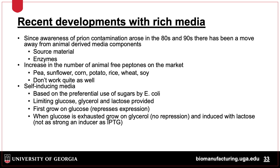Originally derived from animal sources, most rich media products are now plant-based in order to meet regulatory requirements that disallow animal components because of risk of viral or other contaminants such as prions. The source material and any enzymes used in the manufacturing of the media must also be considered. Animal-free material typically uses plant-based proteins from pea, sunflower, corn, potato, rice, wheat, and soy.